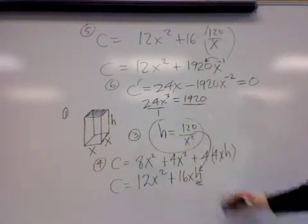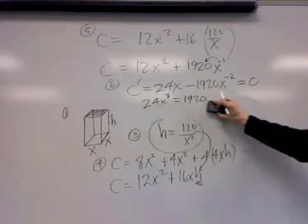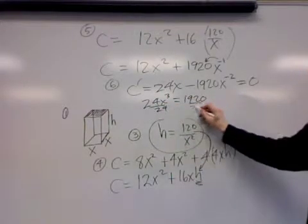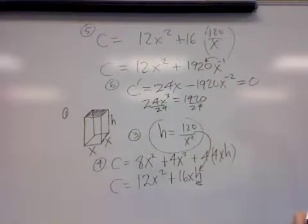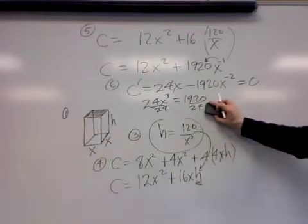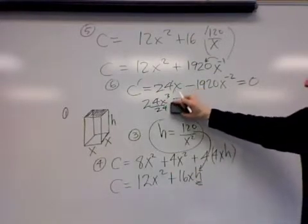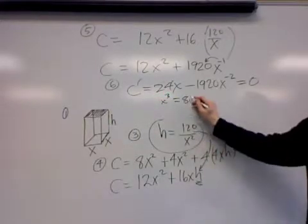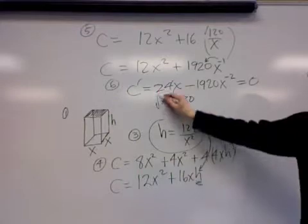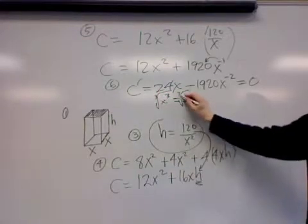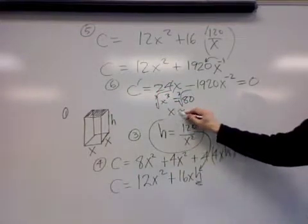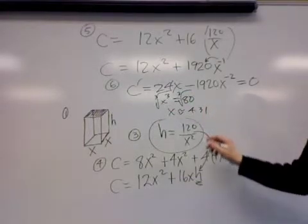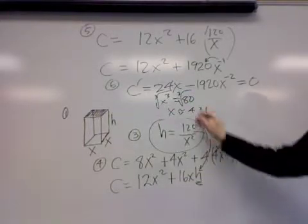x squared times x would be x to the third, and one times 1920 would be 1920. With a couple quick moves, we can divide by 24, giving us 80, and then the cube root gets used to figure out that x is approximately 4.31.